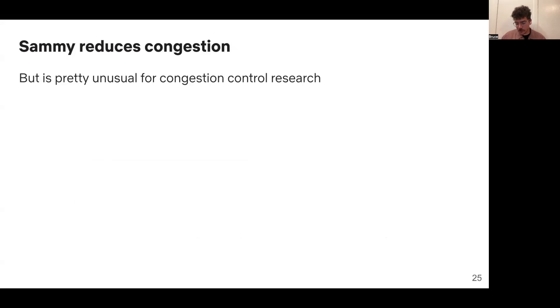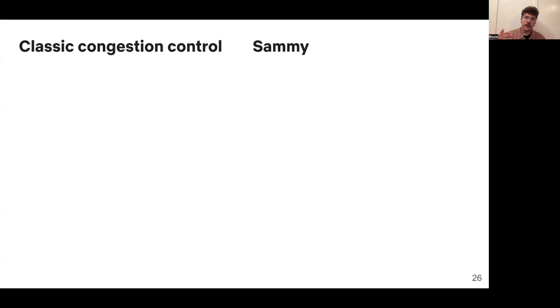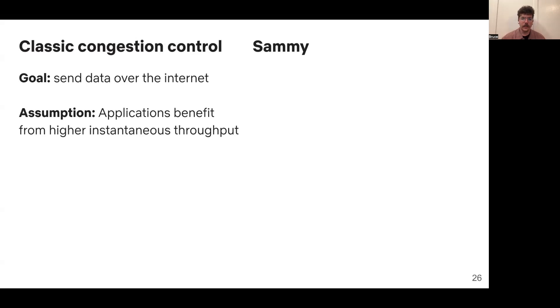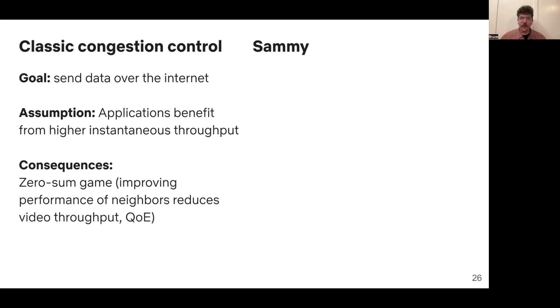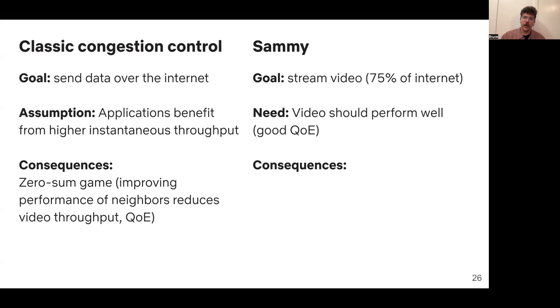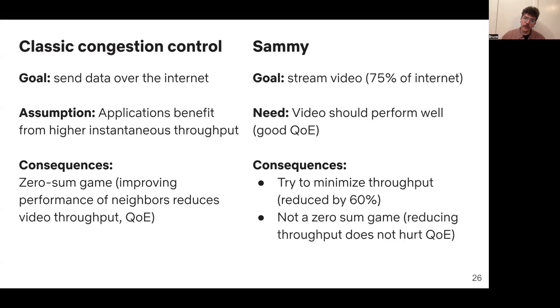So SAMI reduces congestion, but I wanted to conclude by highlighting why it's a bit unusual for congestion control research. In your classic congestion control algorithm, you're just trying to send some generic data over the internet. And to do so, you need assumptions, and so you typically assume that applications benefit from higher instantaneous throughput. This leads to some challenges. And we tend to think about congestion as a zero-sum game, where if we improve the performance of neighbors or improve the performance of ourselves, this hurts the other people in the network. With SAMI, we have one goal, which is to stream video, because this is the majority of traffic on the internet today. Because of this, we don't need these assumptions because we know exactly what video needs to perform well, which is that it has good QoE. As a consequence, we can actually try to minimize instantaneous throughput, and we reduce instantaneous throughput by like 60%. This is the opposite direction of the goal of typical congestion control work. We also show via SAMI that congestion, at least at the QoE level, is not necessarily a zero-sum game. We're able to reduce throughput for SAMI without reducing video QoE and improve the QoE of our neighbors.